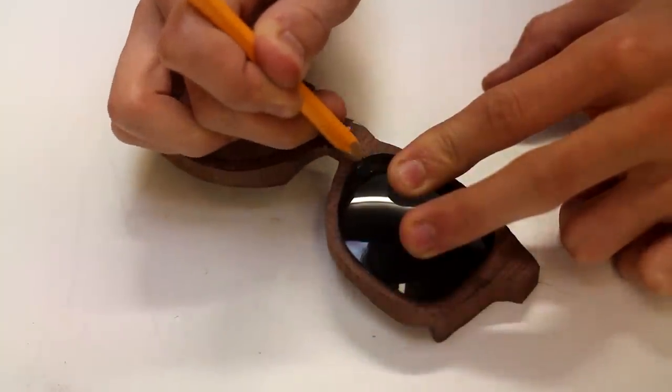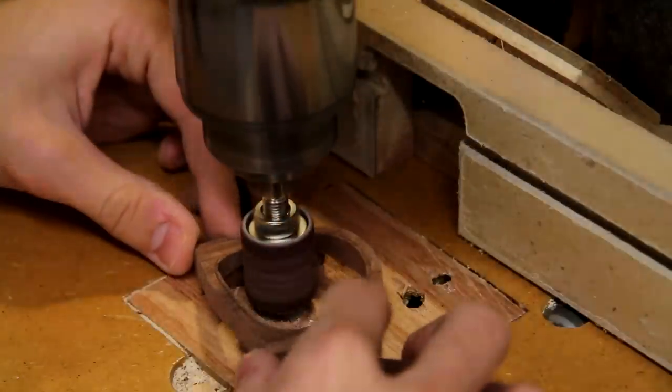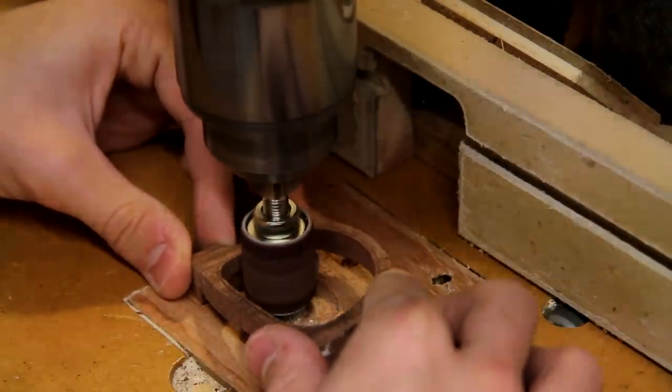Using a little drum sanding attachment here at the drill press, I'm sanding slightly shy of that line because I'll need to leave a slight ridge around the lens to hold it in.